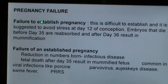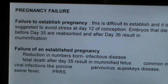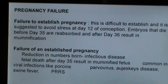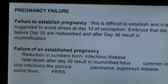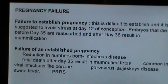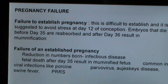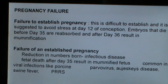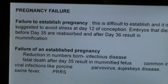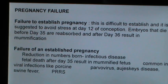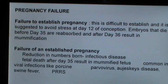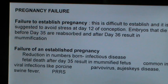Pregnancy failures can be of two types: failure to establish a pregnancy, which is difficult to establish — it is suggested to avoid stress at day 12 of conception; embryos that die before day 35 are reabsorbed, and those dying after day 36 result in mummification. The second type is failure of an established pregnancy — reduction in numbers born alive could be due to infectious disease. Fetal death after day 35 results in a mummified fetus, common in viral infections like porcine parvovirus, Aujeszky's disease, swine fever, and PRRS.